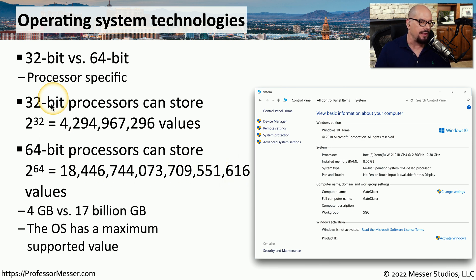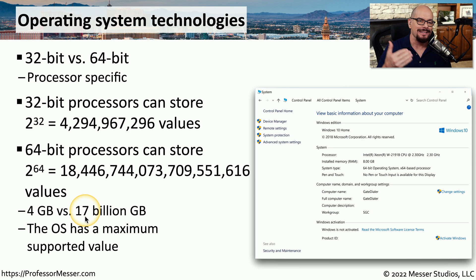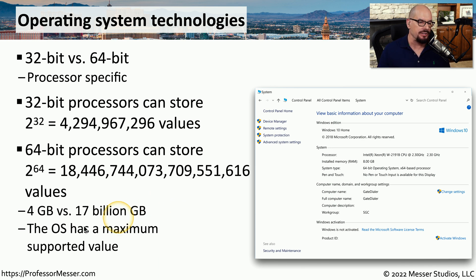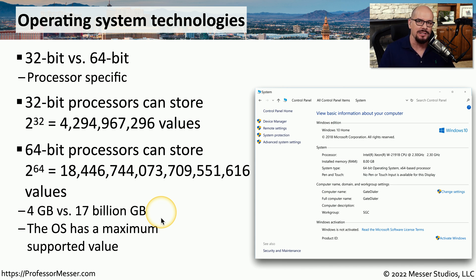If you were to look at this in terms of how much memory you can store in a system, a 32-bit processor can access 4 gigabytes of information, whereas a 64-bit processor can access 17 billion gigabytes of information. This doesn't necessarily mean that the 64-bit operating system you're using can access 17 billion gigabytes, because most operating systems will have a maximum supported value for the OS.